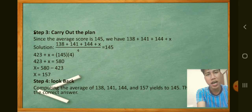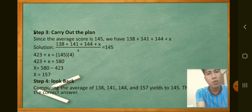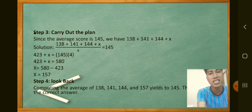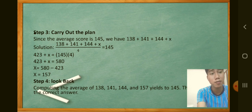Step 4 — Look Back. Computing the average of 138, 141, 144, and 157 yields 145. Thus 157 is the correct answer. That is the use of George Polya's basic principles in problem solving.